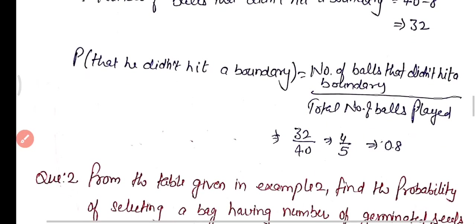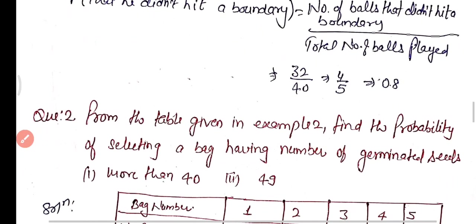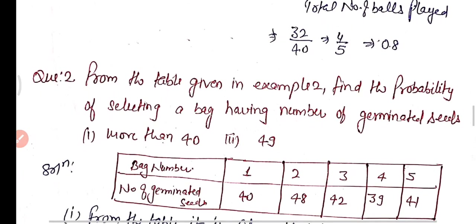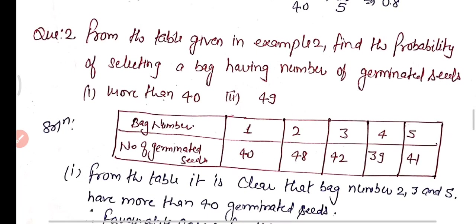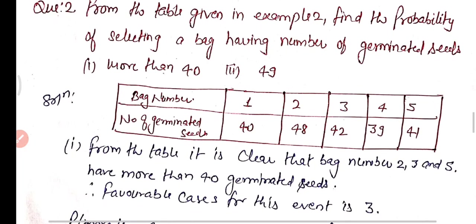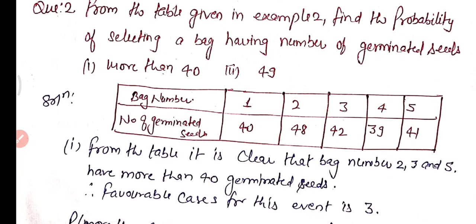From the table given in example number two, find the probability of selecting a bag having number of germinated seeds more than 40, and also find the probability for 49 germinated seeds.